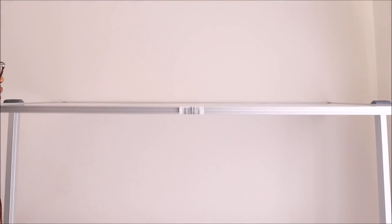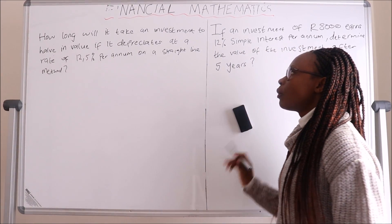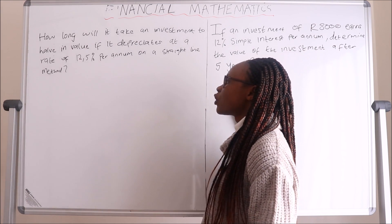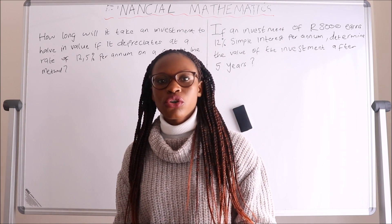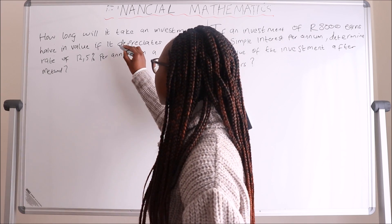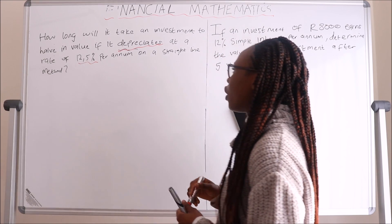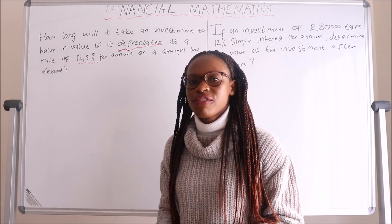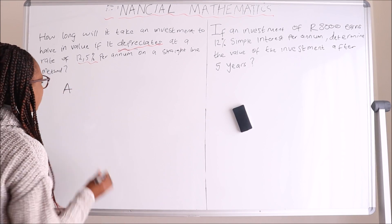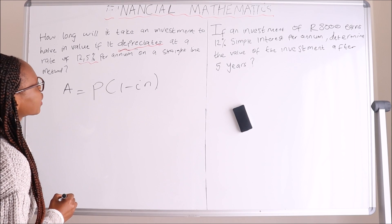Now let's go to the next question. It says: how long will it take an investment to halve in value if it depreciates at a rate of 12.5 percent per annum on a straight line method? Remember, the straight line method is also known as the simple interest method — simple decay or growth. Here the investment is depreciating at 12.5 percent per annum, so the equation to use is simple decay: A equals P times one minus IN. We are looking for N, the time period.